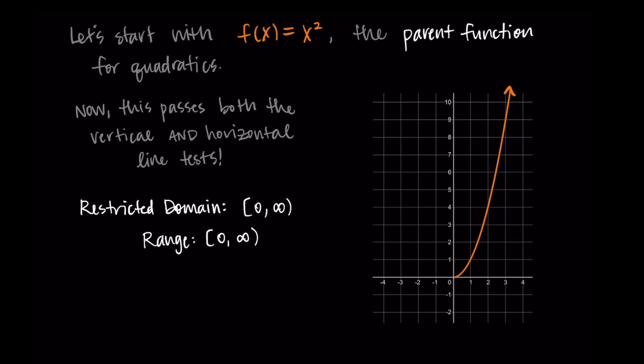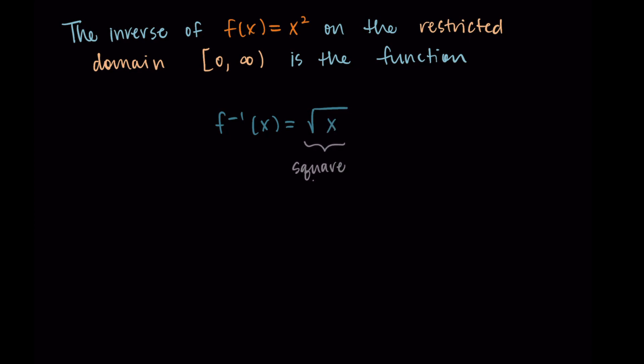We've fixed our quadratic so that it's one-to-one and now we can find the inverse. The inverse of f(x) equals x squared on the restricted domain of zero to infinity is the function f inverse of x equals square root of x. This is the square root of our input x. We call this a radical function. That symbol that represents the square root, that's a radical symbol, and so this is a radical function.